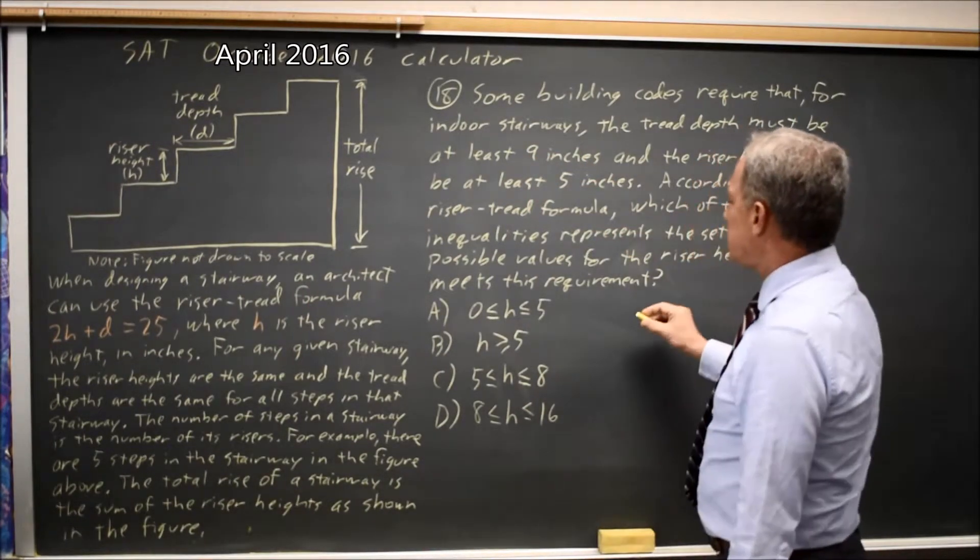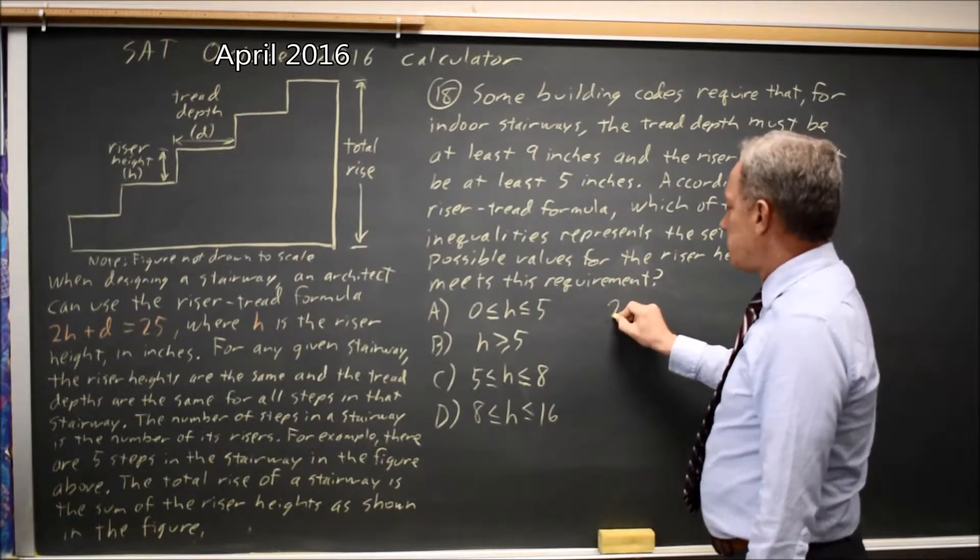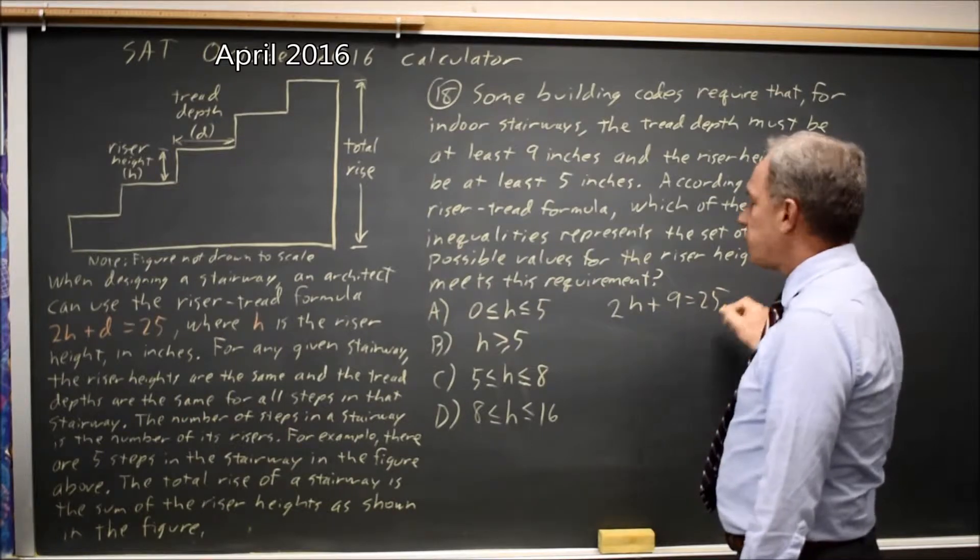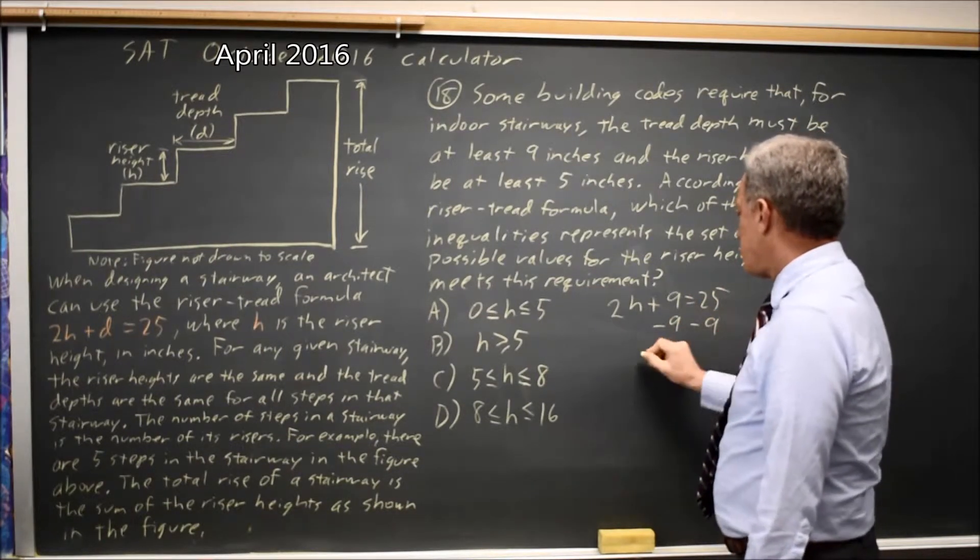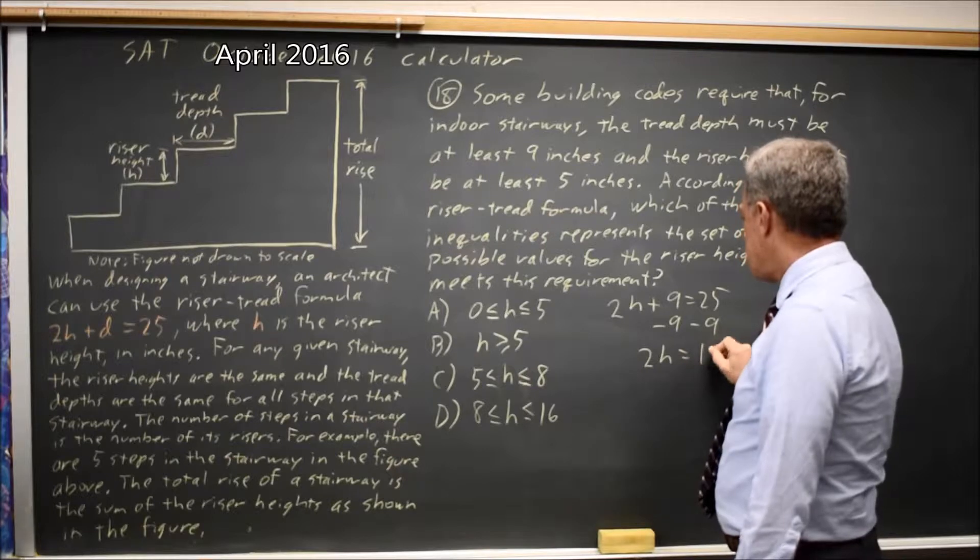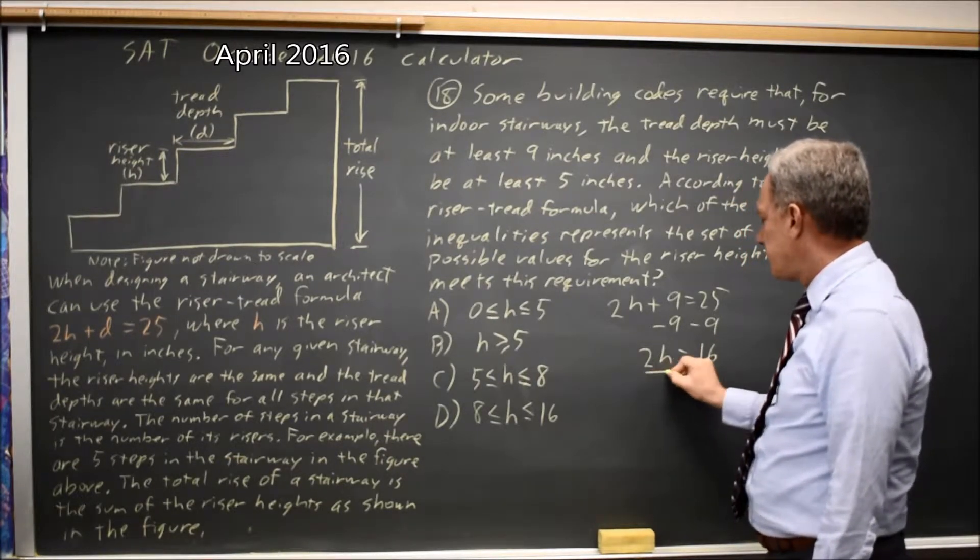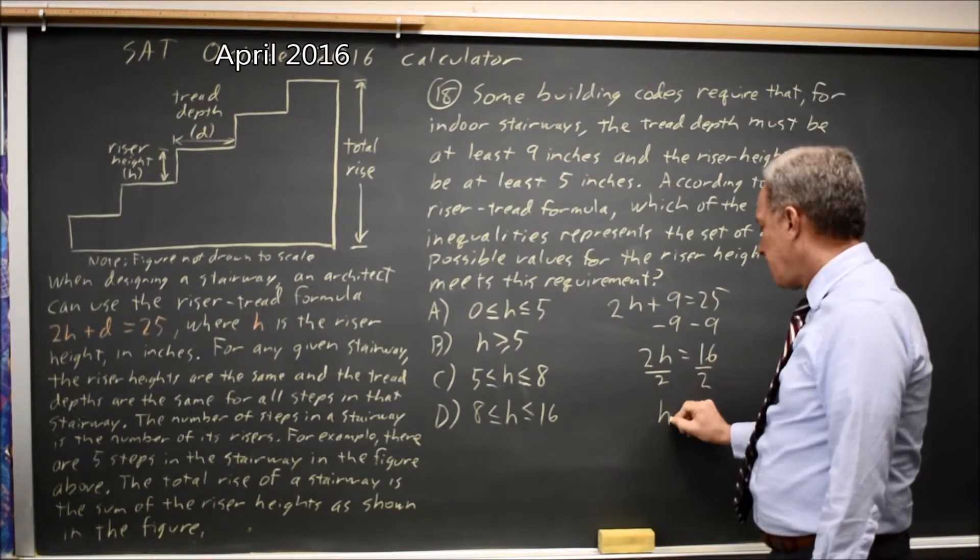So if D is at least 9, then 2H plus 9 equals 25 when D is exactly 9. So 2H equals 16 if I subtract 9 from both sides. To get 2H by itself, divide by 2, and H equals 16 over 2 equals 8.